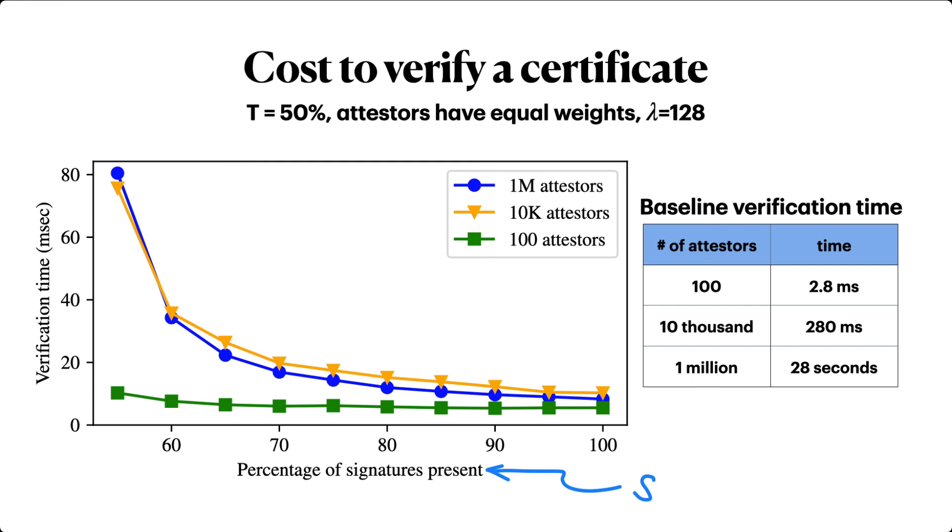As a final note, the cost of generating a compact certificate, which I haven't shown here, is also pretty reasonable. For 1 million attesters, the cost is under 60 seconds on a single thread.